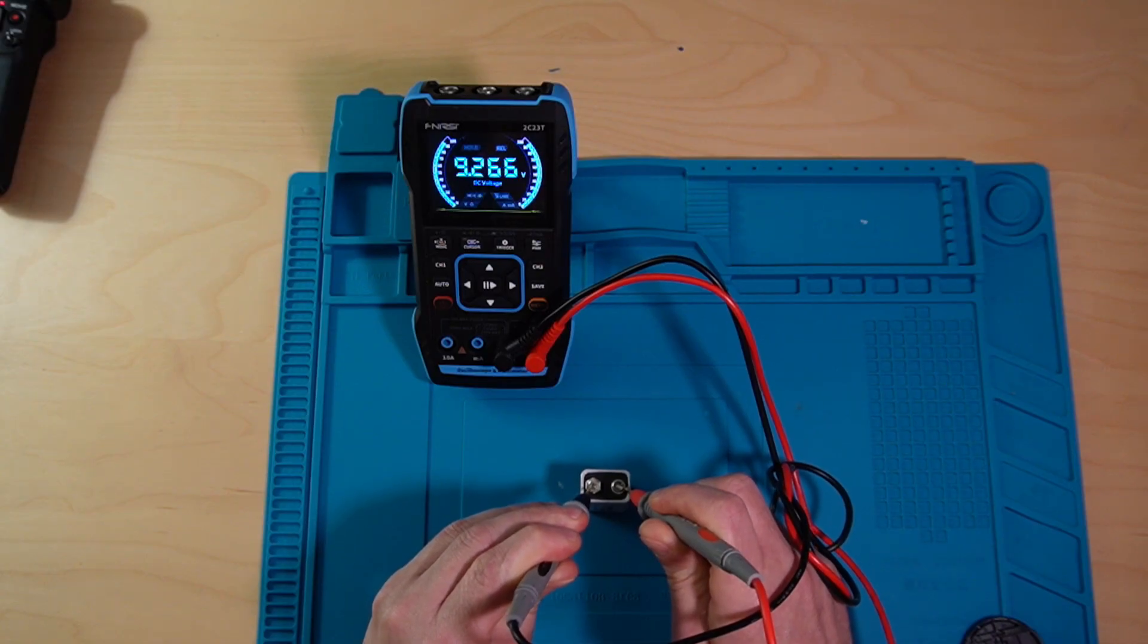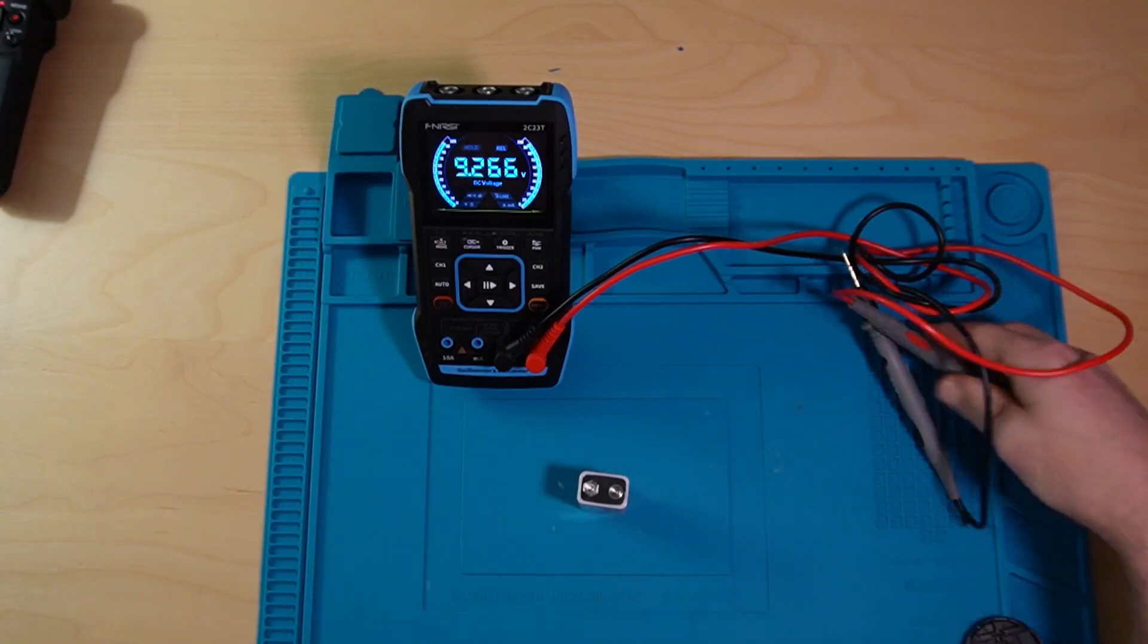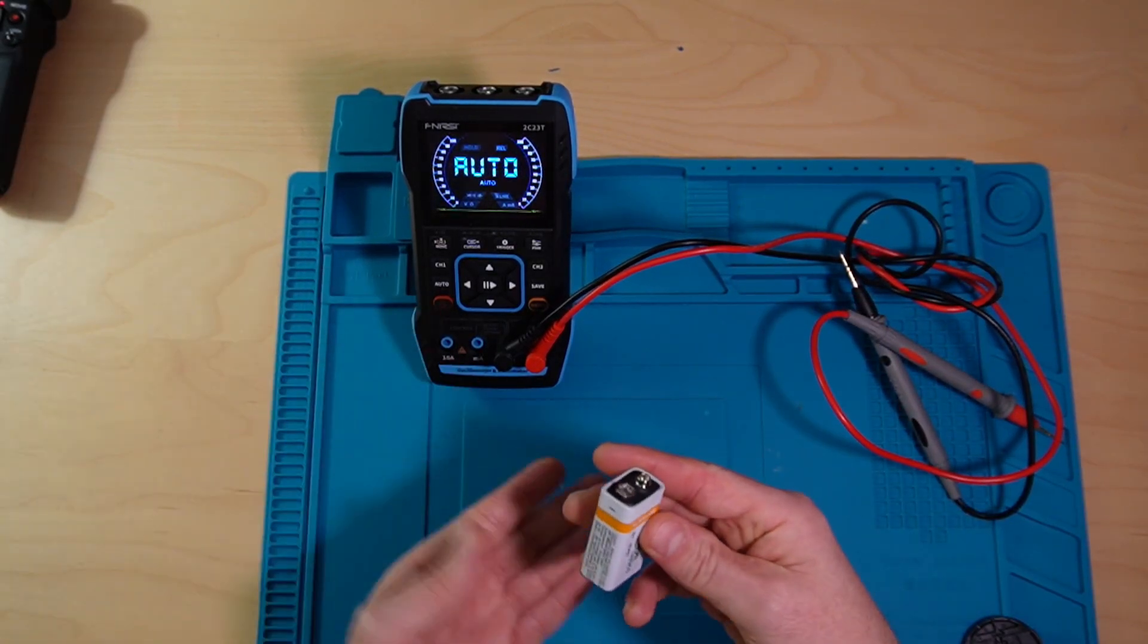And as you can see on the screen, I am pulling 9.265 volts, which sounds appropriate, good, since this is a 9-volt battery.